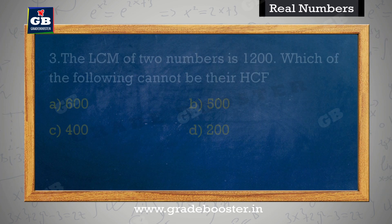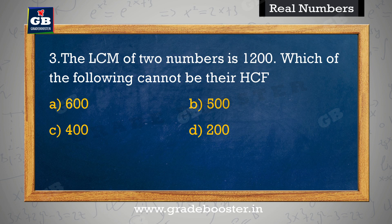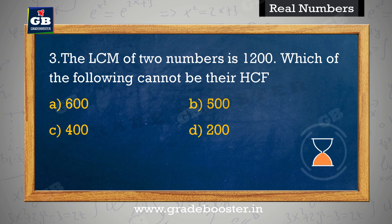The LCM of two numbers is 1200. Which of the following cannot be their HCF? Do numbero ka LCM 1200 hai. Nimn mein se kaun sa unka HCF nahi ho sakta hai. A. 600, B. 500, C. 400, D. 200.